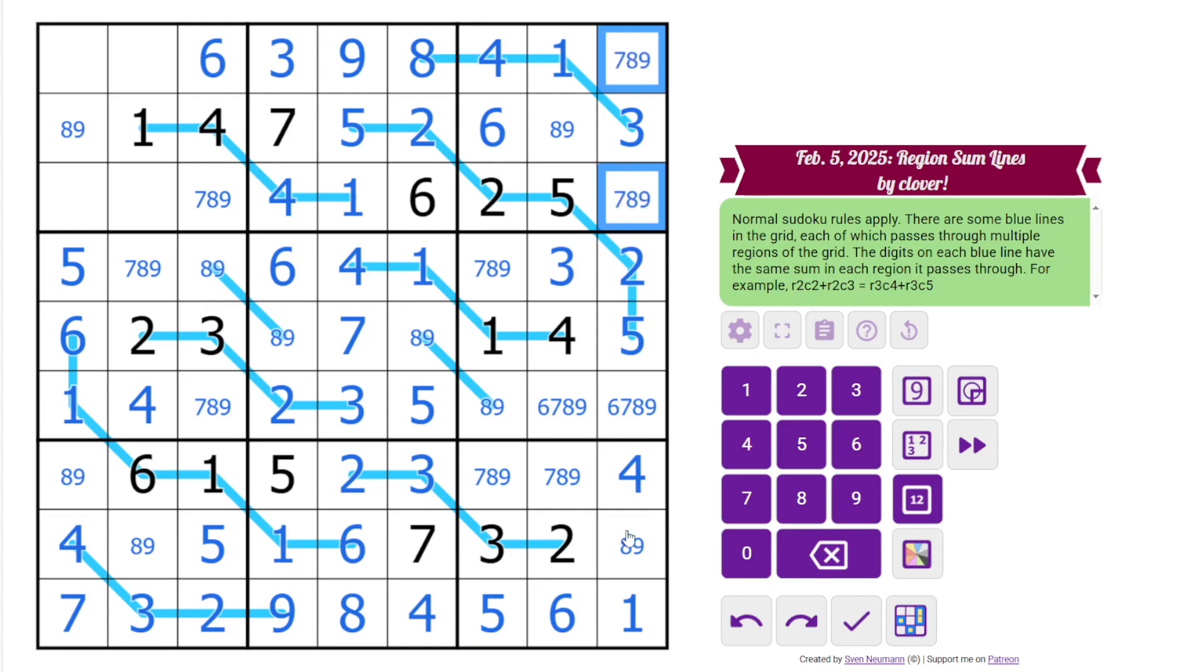These are also 7, 8, 9. Where does 6 go in this column? It must go here. 3 in this row must go here. 2 goes here. 5 goes here. 5 goes here. So now we have a bunch of 7, 8, 9s left. 7 must be in one of those cells, so this is 7.